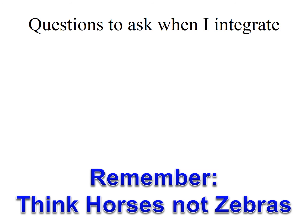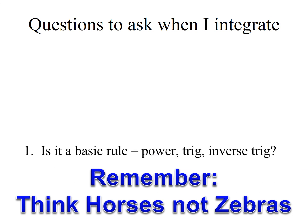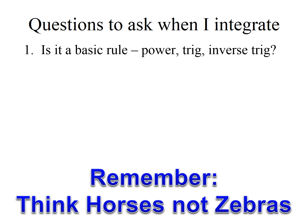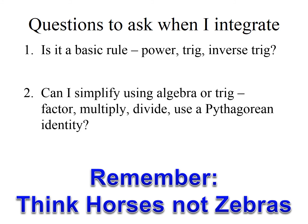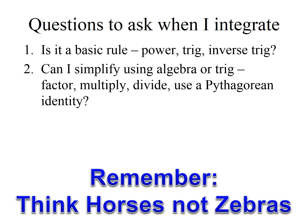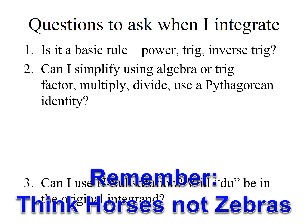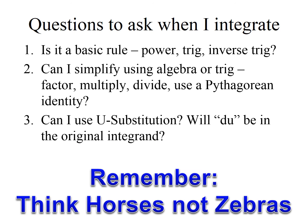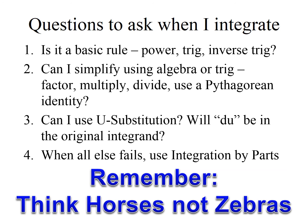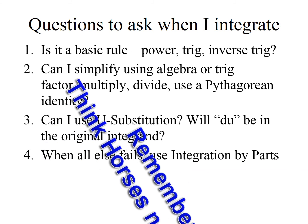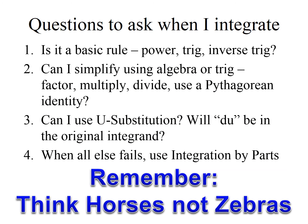Here's what to remember: always try the simplest solution first. Ask yourself: is it a basic rule — can you use power, trig, or inverse trig? Try that first. If not, can you simplify using algebra or trig, by multiplying or dividing, or with a Pythagorean identity? If none of that works, try U substitution — remember dU has to be in the original integrand. Only if all else fails should you use integration by parts. Think horses, not zebras — and no unicorns, which is fictional math you make up.